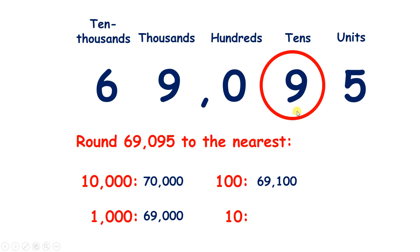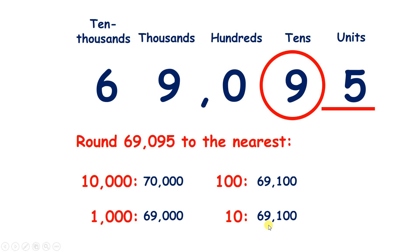And rounding to the nearest 10, if we look to the right we have 5 or more — we have 5 — so we need to raise the score. But 9 is our highest digit, so we move along, and that rounds to 69,100.